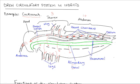Eventually the blood returns to the tubular heart and enters the heart through openings. Each chamber has a pair of lateral openings known as ostia. One opening is called an ostium, and plural is known as ostia.